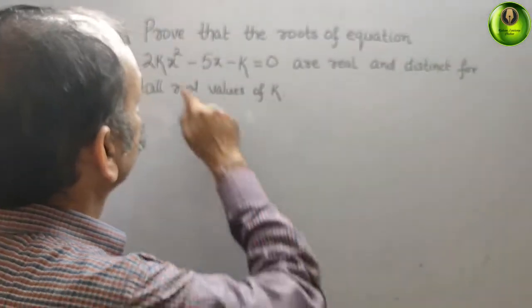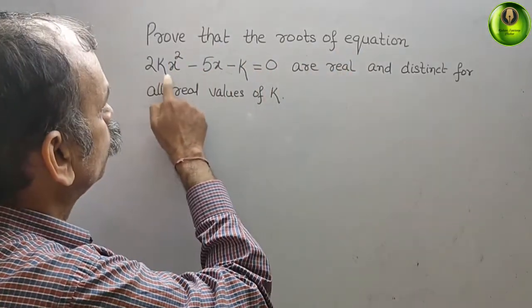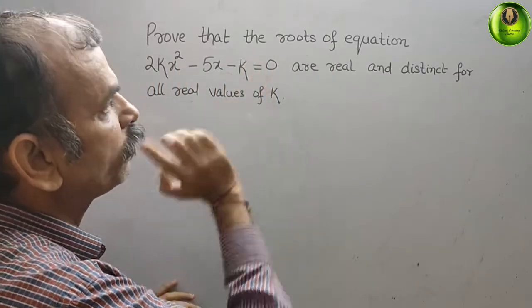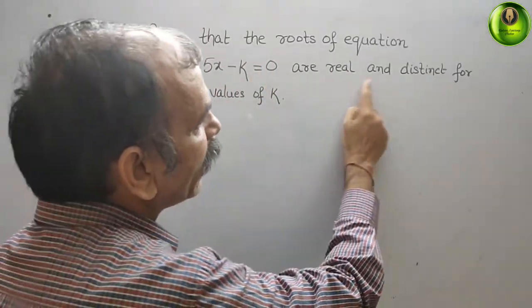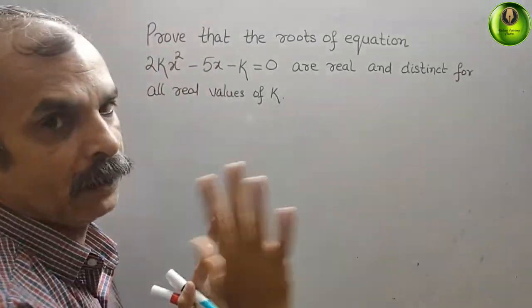Your question is, prove that the roots of the equation 2kx² - 5x - k = 0 are real and distinct for all real values of k.